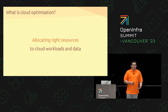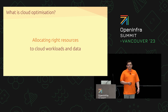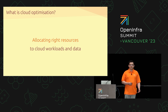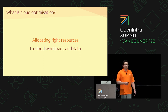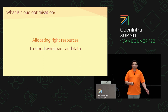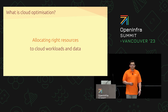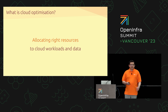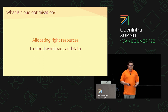Let's define what cloud optimization is first. It's basically allocating the right resources to cloud workloads and data. Whenever you are running an application or storing data in a cloud, you need to decide where it's going to be hosted or stored — whether that's a public cloud, a specific type of storage, your own cloud, or a cloud run by a managed service provider. It's all about making the right decision.